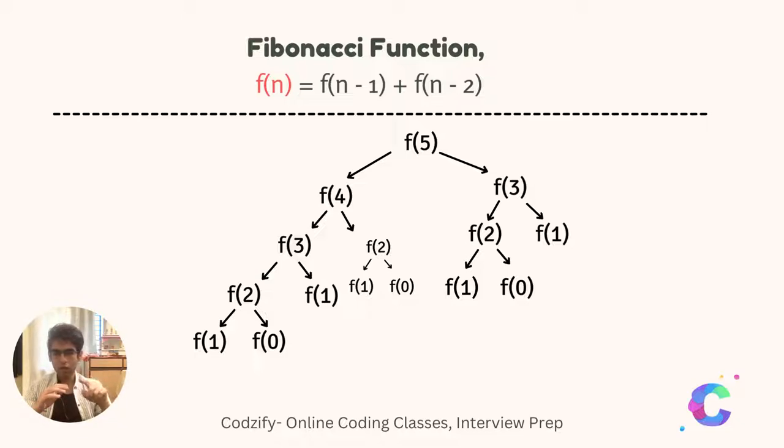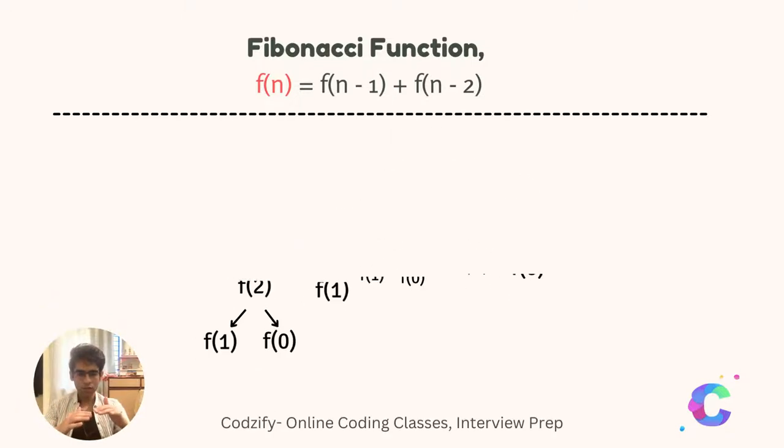F of four will return four minus one, which is three, and four minus two, which is two. F of three will return f of two, and f of two will return f of one and f of zero. In this way, the whole hierarchy of the Fibonacci sequence gets constructed.